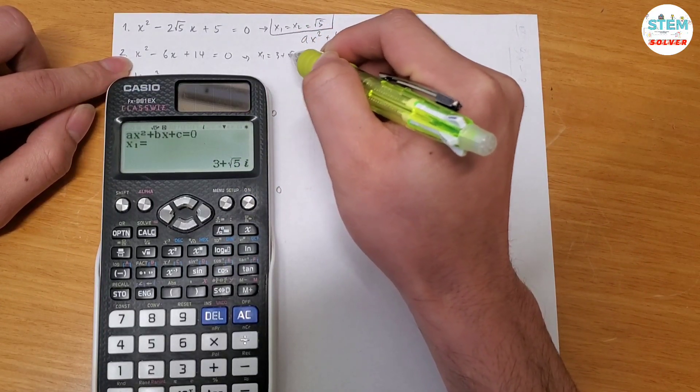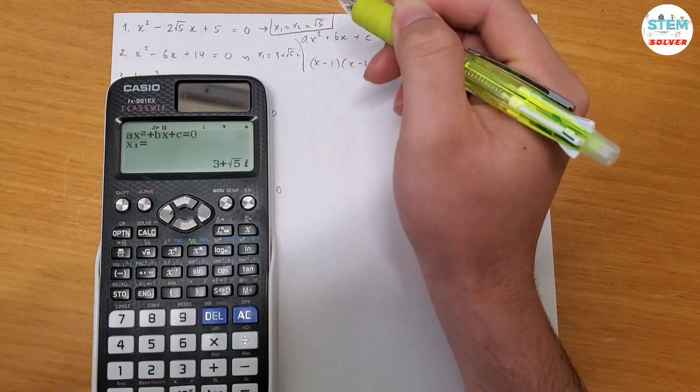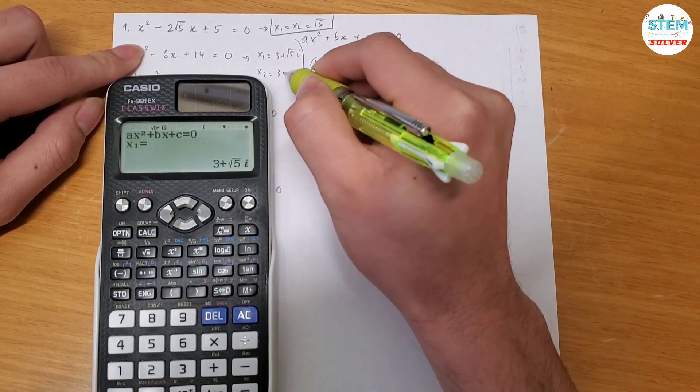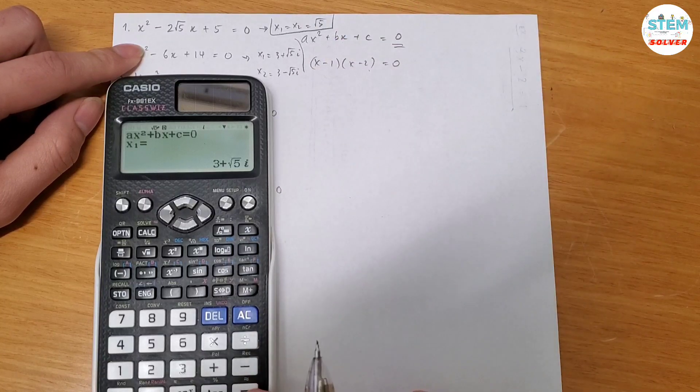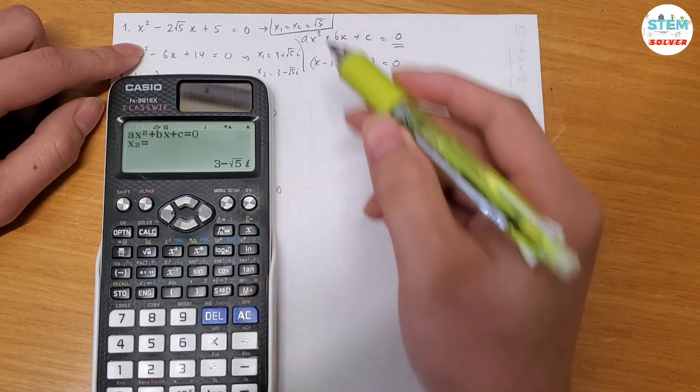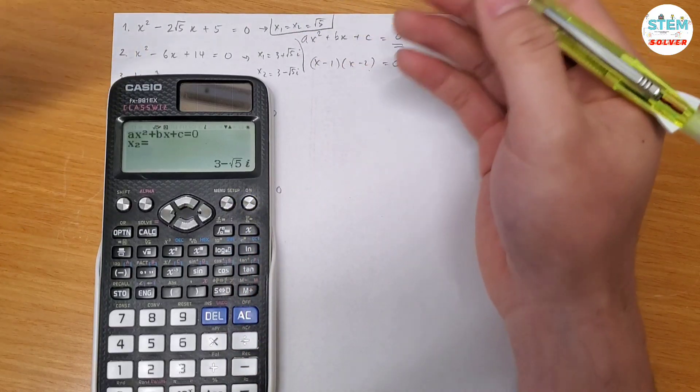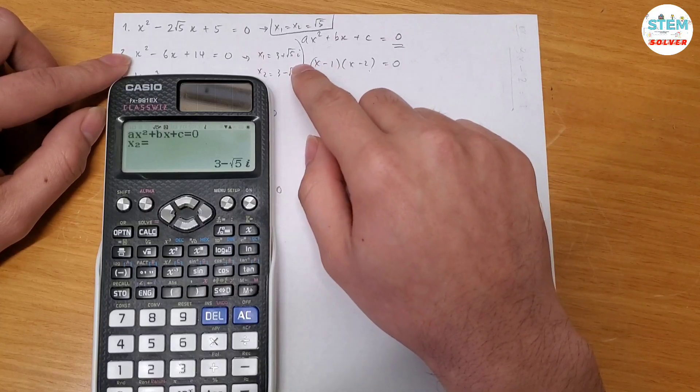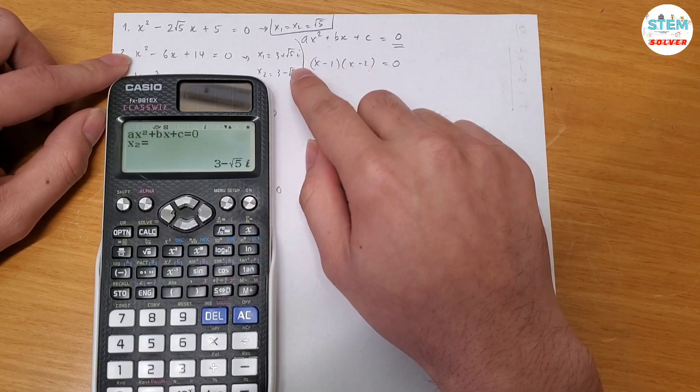x1 = 3 + √5i. Automatically I know that my x2 has to be 3 - √5i, okay let's see, hit the equal sign again. See, 3 - √5i, because these are conjugate roots. So once you know one you should know the other for the imaginary roots. That's it.